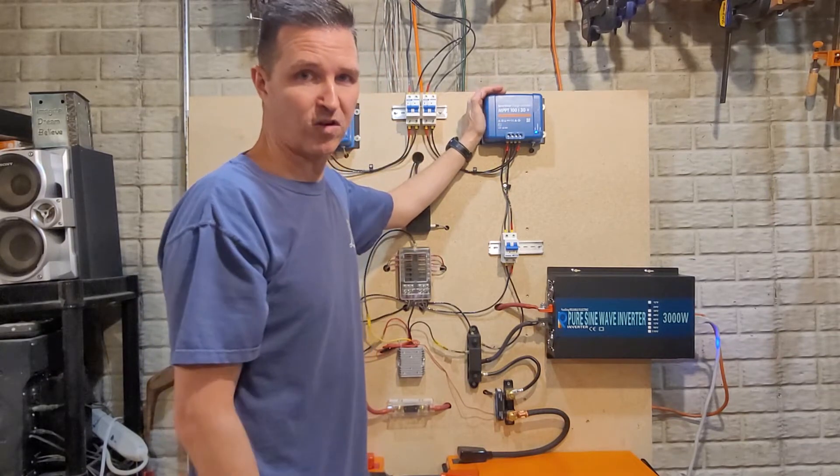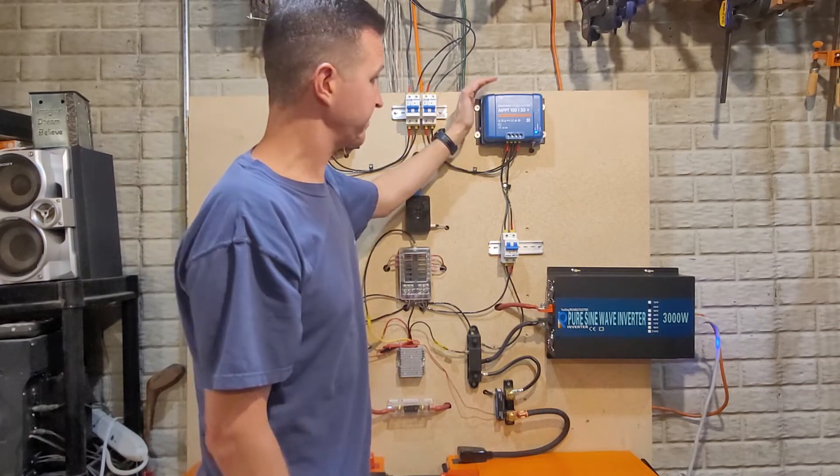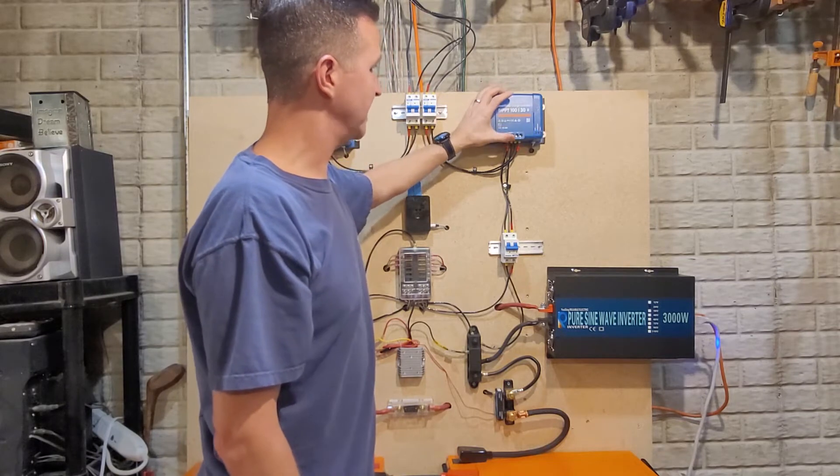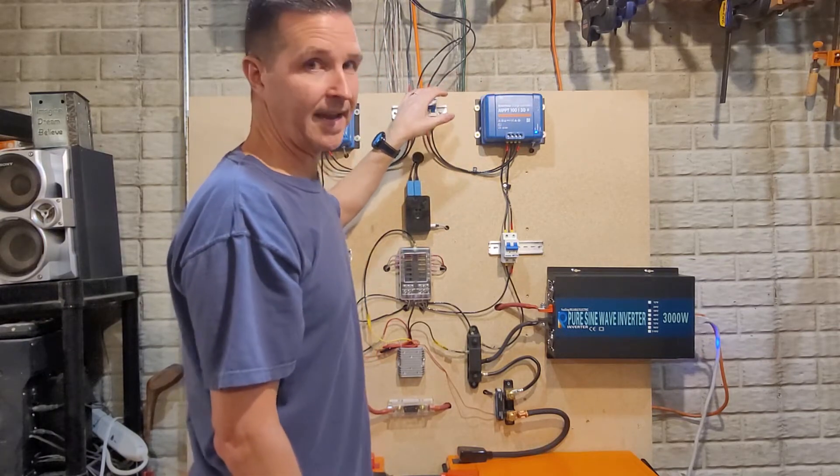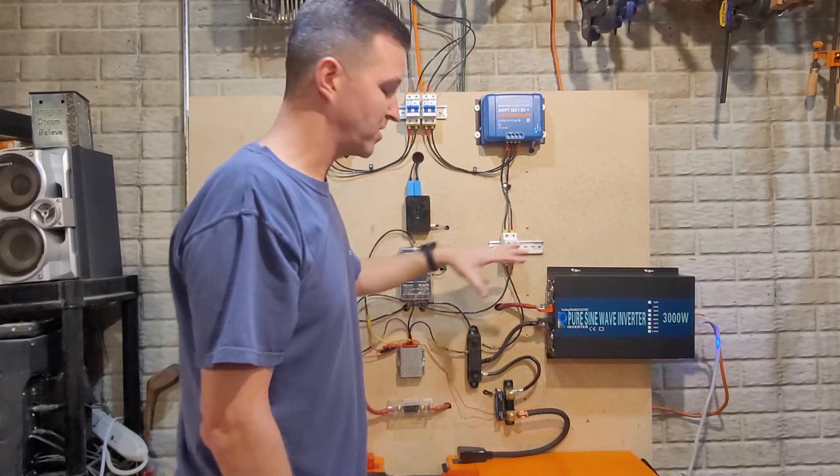These are called solar charge controllers. There's two different types. I have an MPPT. What it does is take the voltage and amperage from the solar panel and convert it to what your system can use.